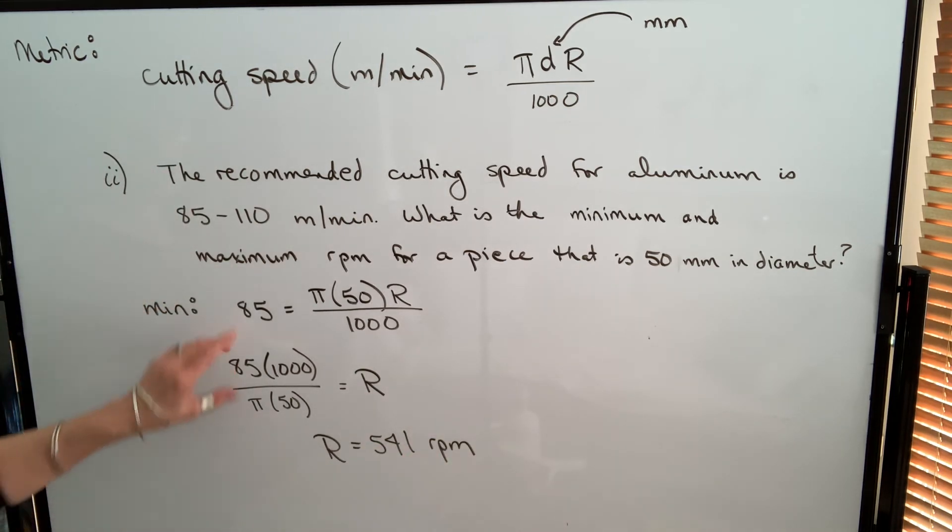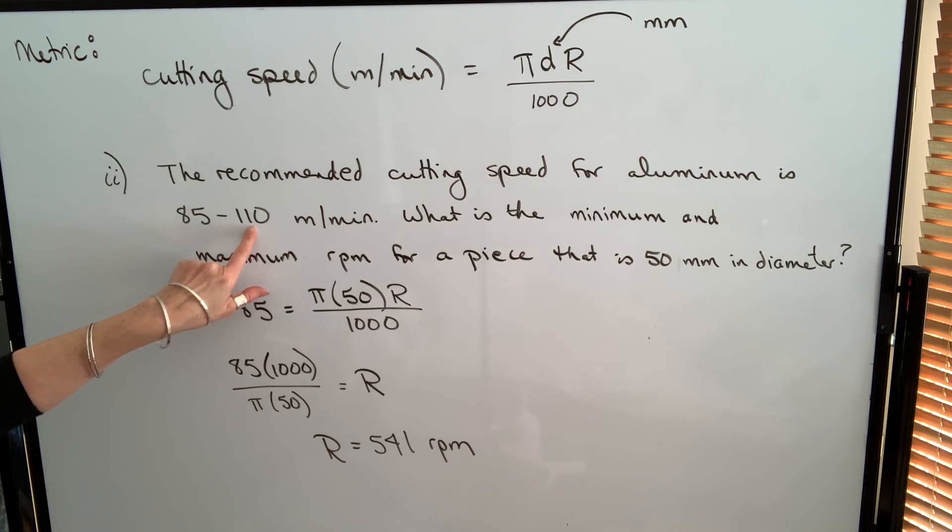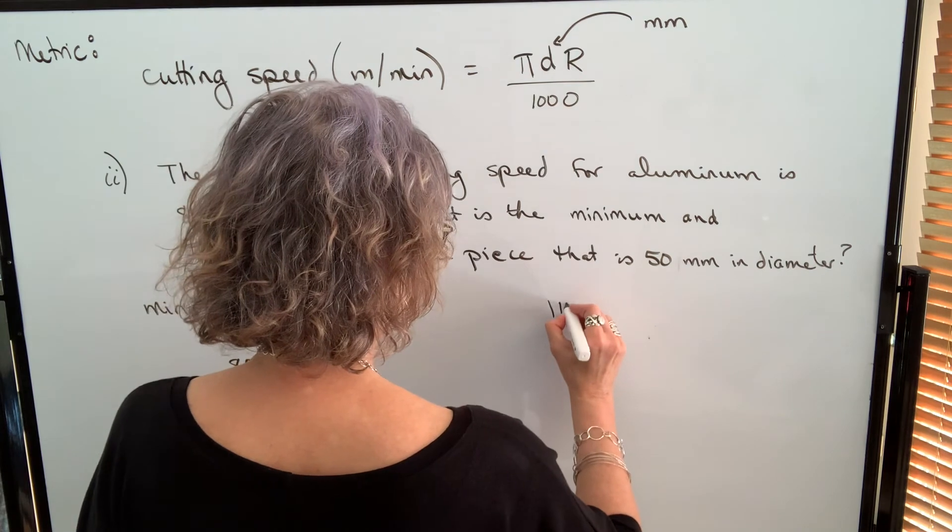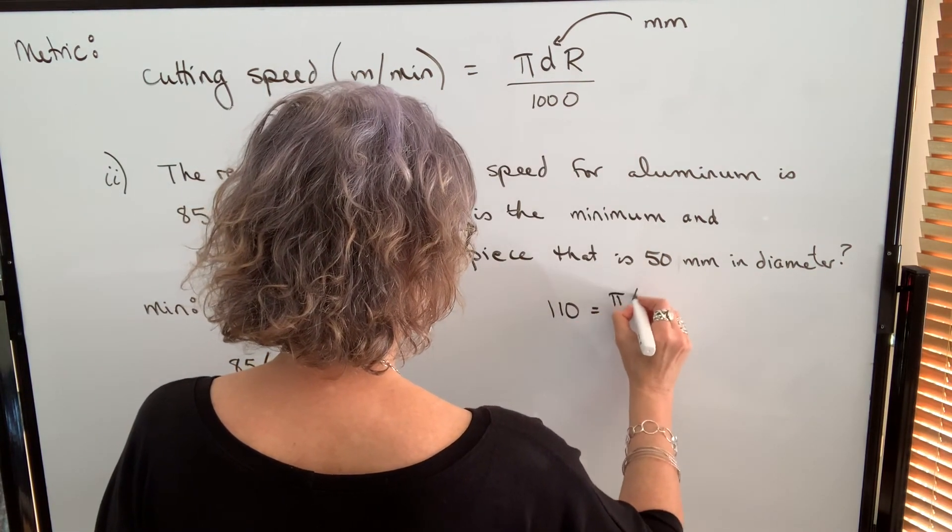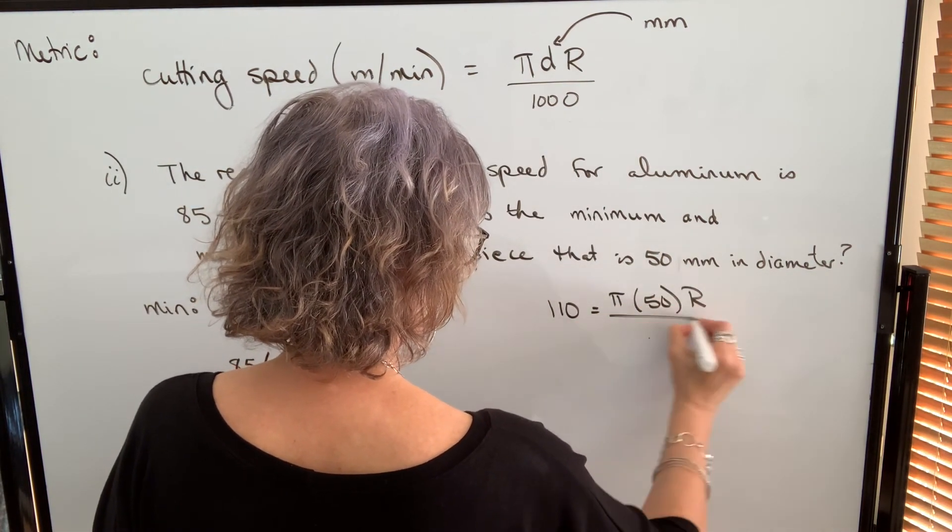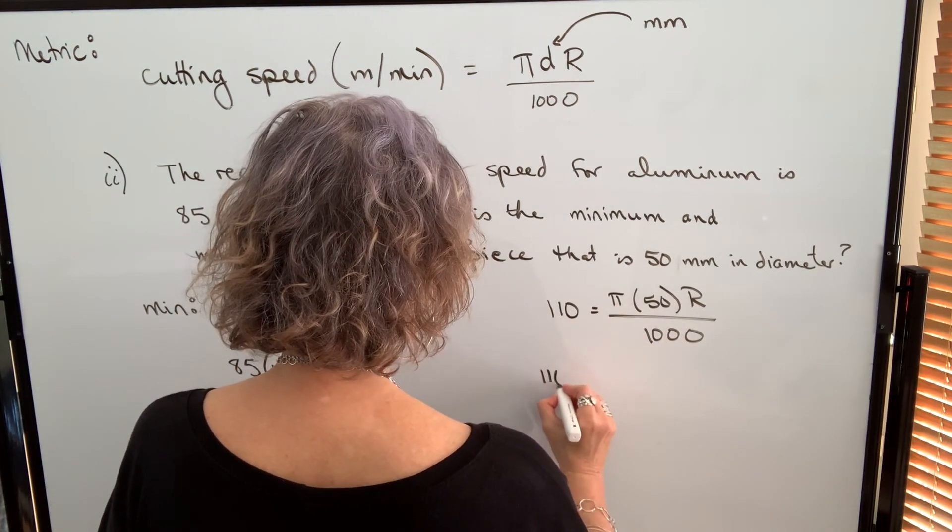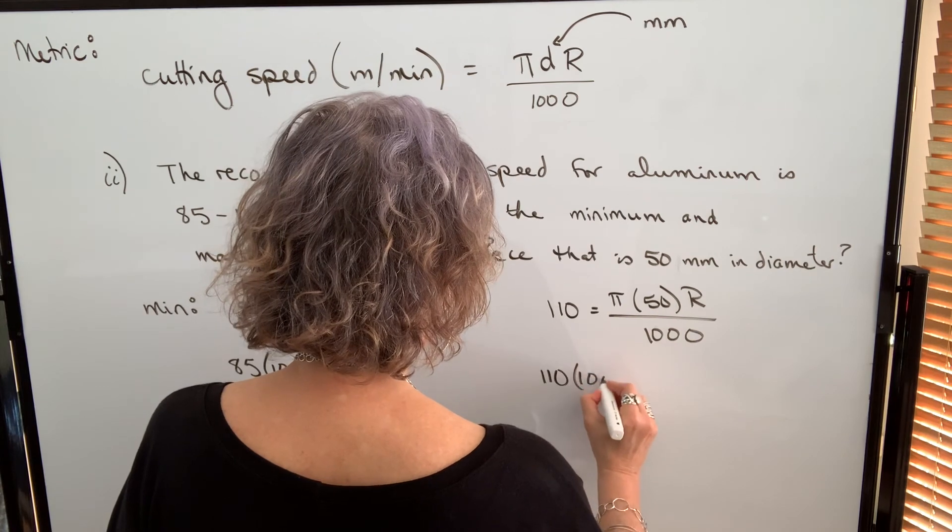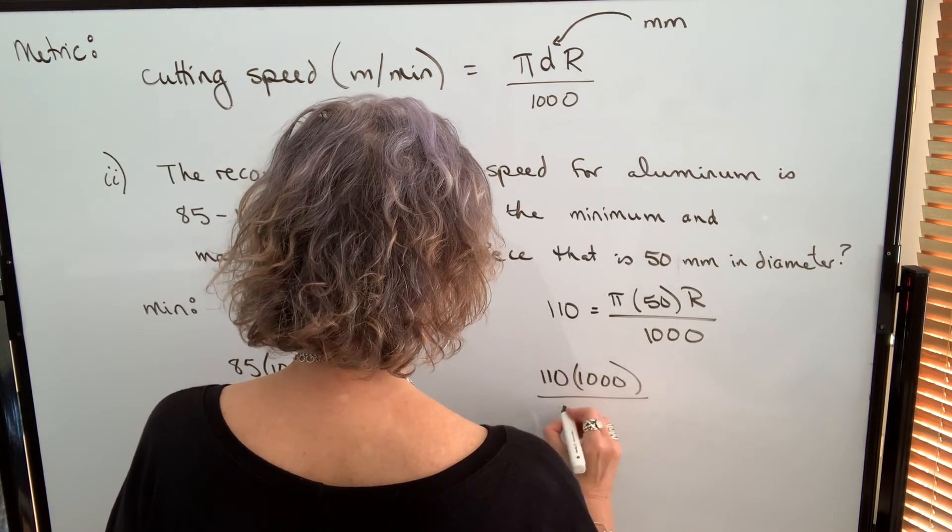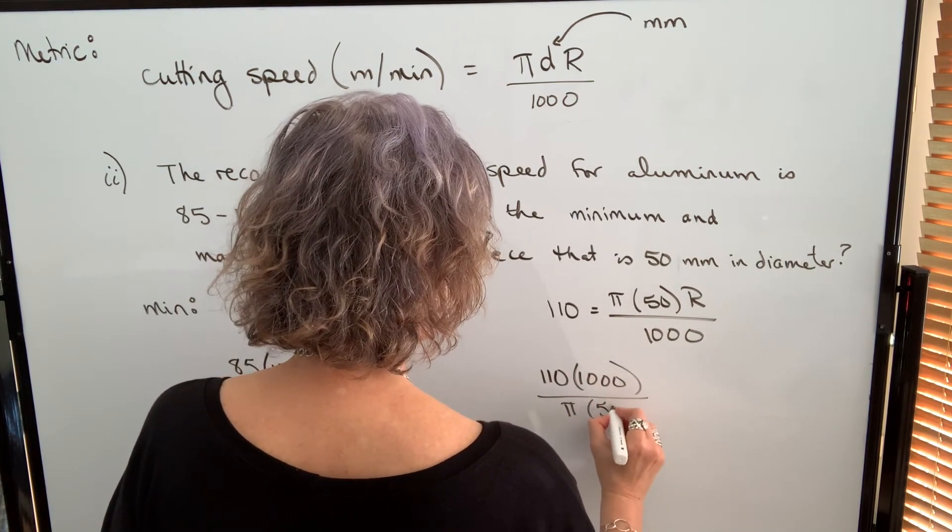I'm going to do the same process with 110 meters per minute as my cutting speed. I take 110, multiply both sides by 1,000, divide both sides by π, and divide both sides by 50.